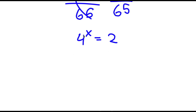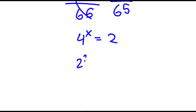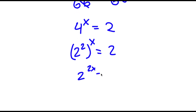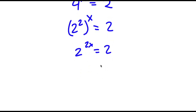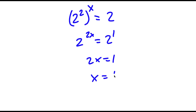Now to solve this, we can tell that x is going to be less than 1 because if you plug in x equals 1, you get 4. So I'm going to start by rewriting 4 as 2 squared, and now I have 2 to the power of 2x is equal to 2, meaning 2x equals 1 and x is equal to 1 half.